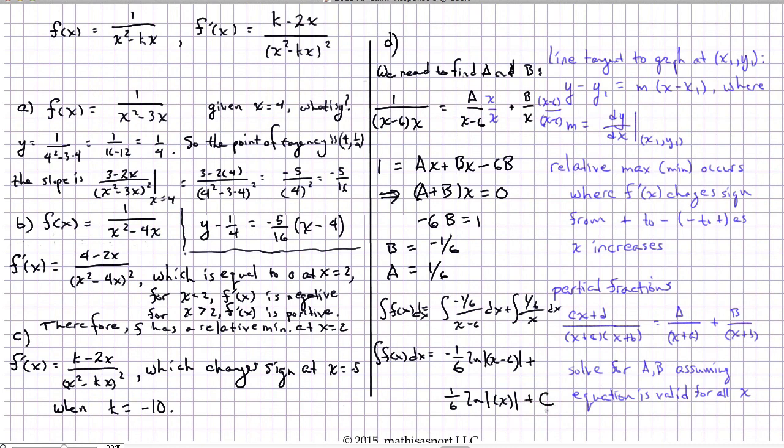Now you might ask how did I know that the integral here, the one over x minus 6, was going to be ln of absolute value of x minus 6. Formally I should have made a u substitution, namely u equals x minus 6, but it goes through in such a simple fashion that I skipped the step.